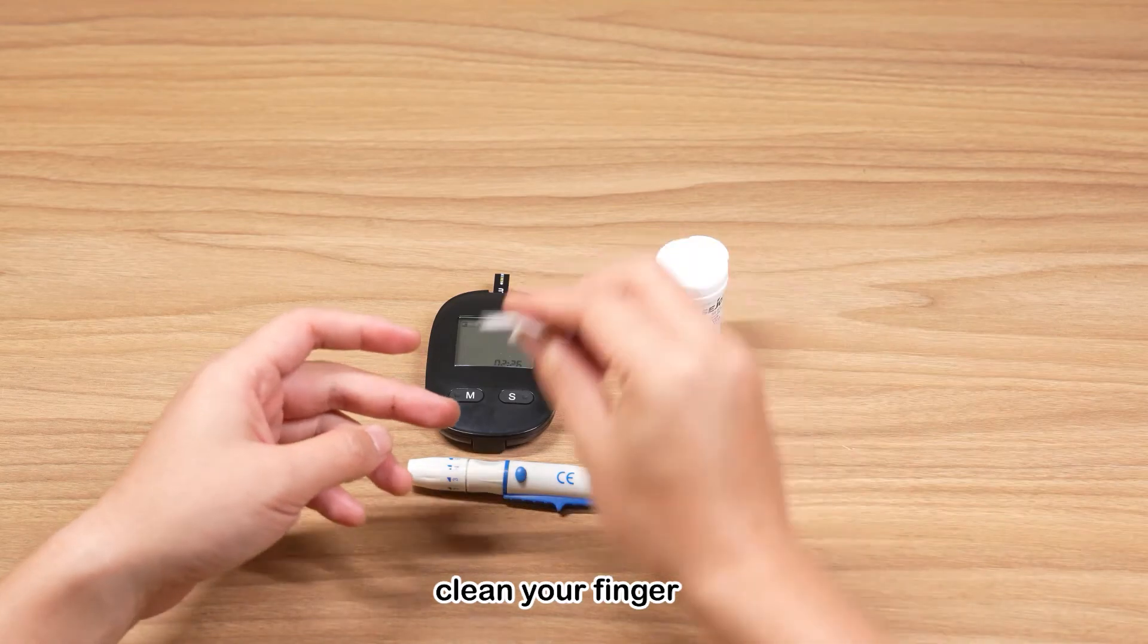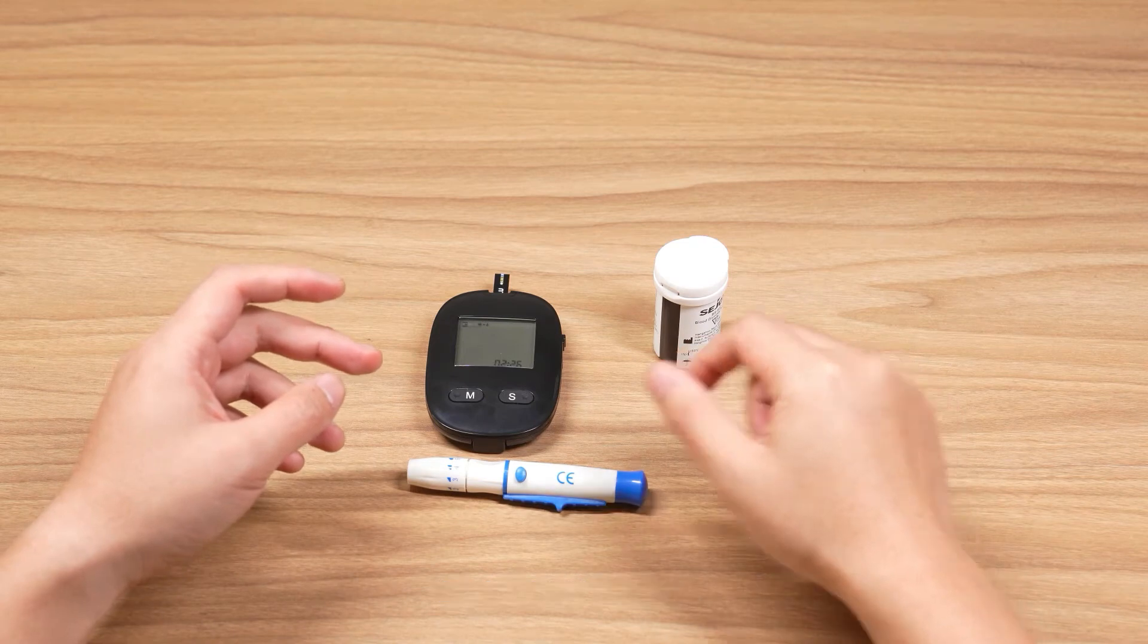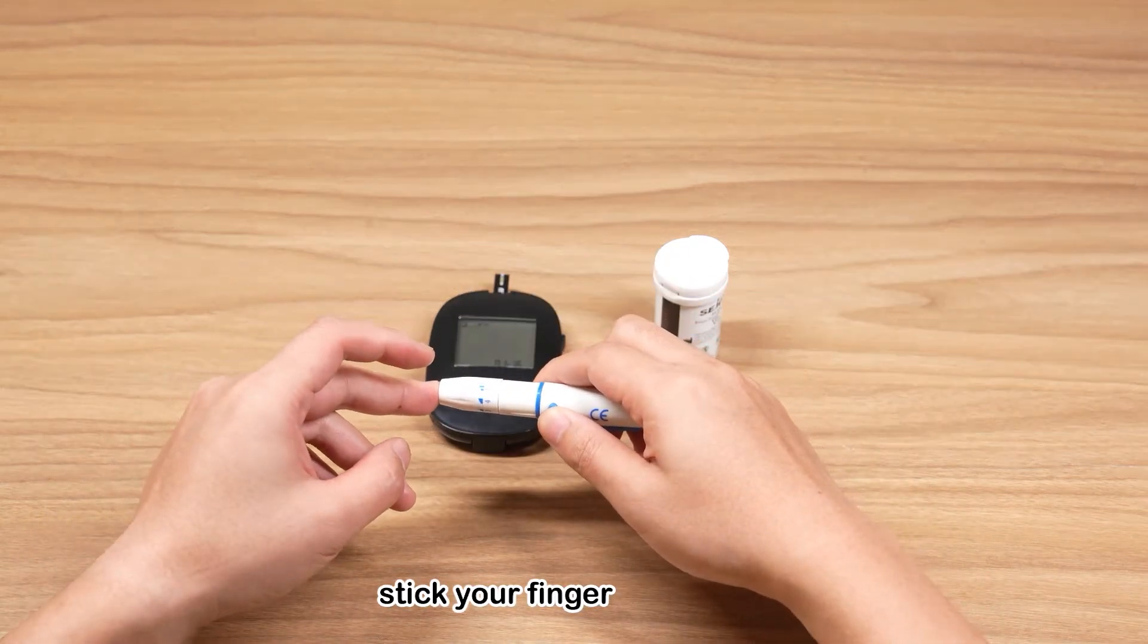Clean with alcohol wipe and wait until it dries. Hold the lancing device firmly against the side of your finger and press the release button.